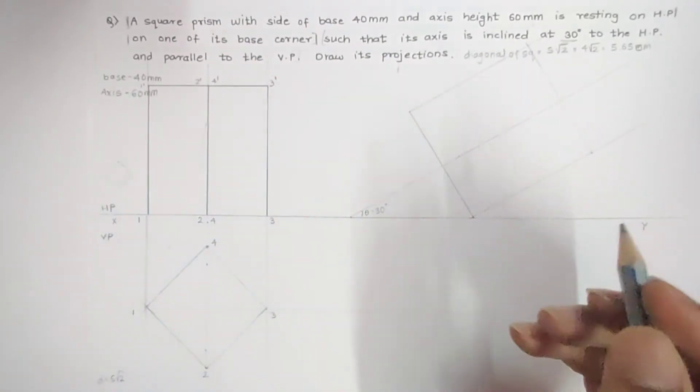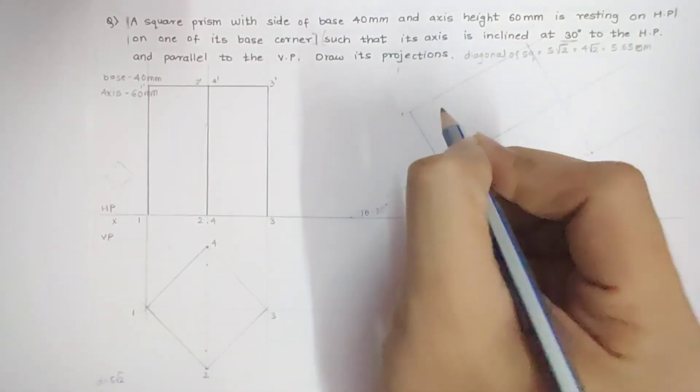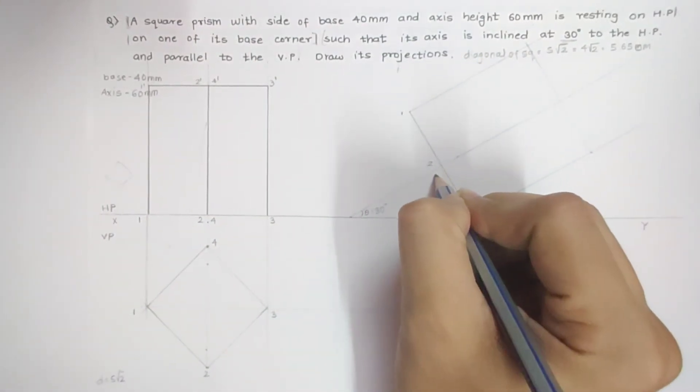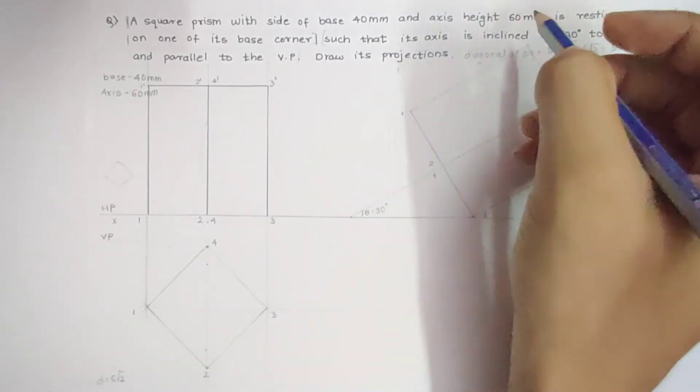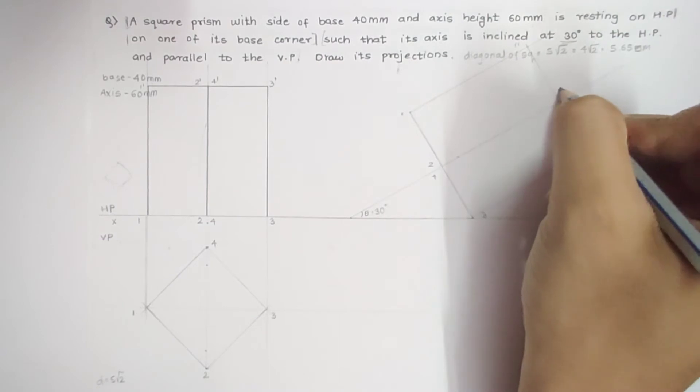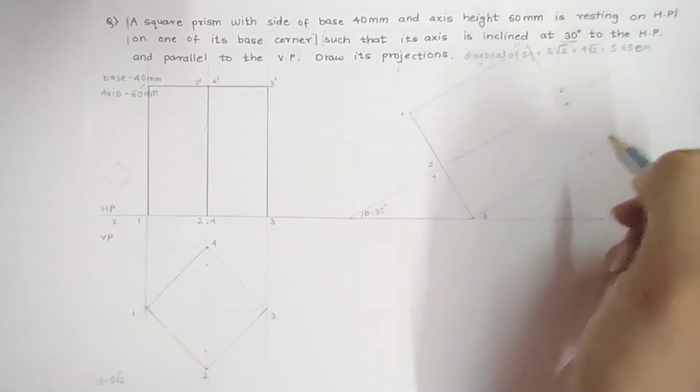Make sure you don't do any mistake while drawing the points. Now I will again name it - this is my first, this is my second, fourth, this is my third. This is one dash, two dash, four dash, this is my three dash.